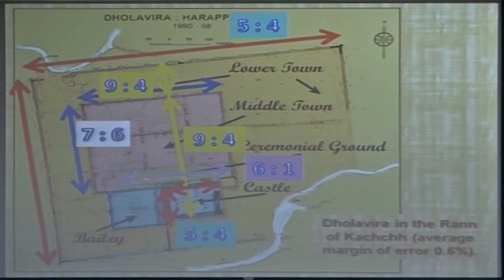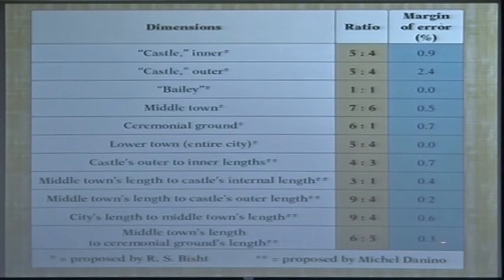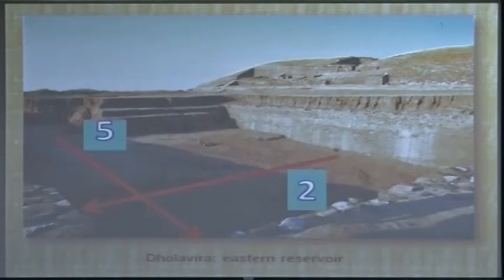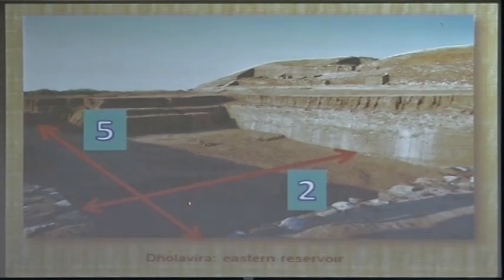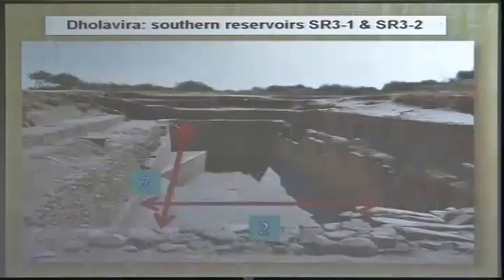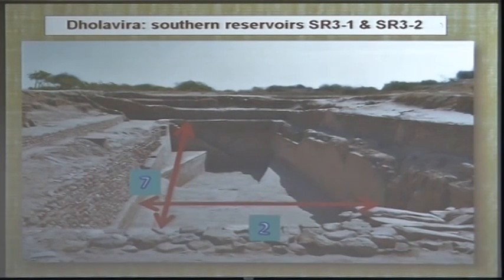The middle town has a proportion of 7 to 6, and there are many more. The average margin of error across these measurements is 0.6 percent — less than 1 percent — confirming deliberate intent. This extends to the reservoirs: the largest reservoir measures 73 meters in length with a ratio of 5 to 2 (that is, 2.5). The major rock-cut reservoir has a ratio of 7 to 2, and the secondary reservoir 11 to 4. Every simple fraction seems to appear somewhere in Harappan structures.